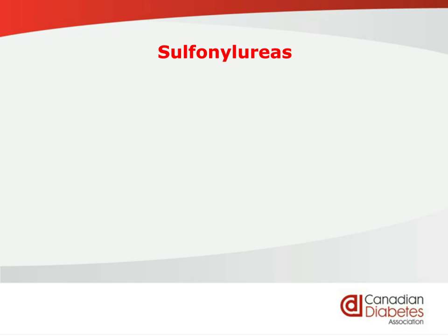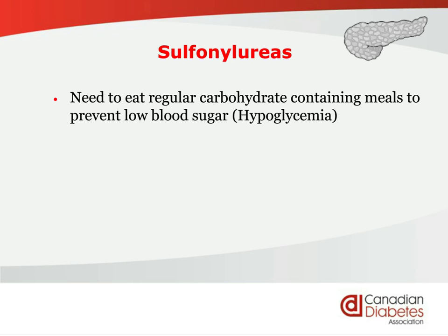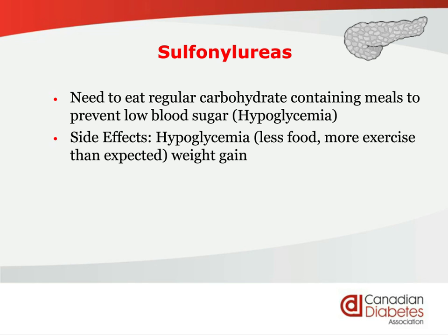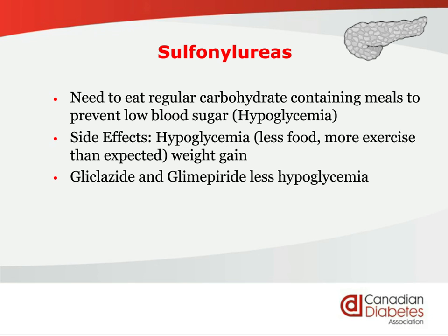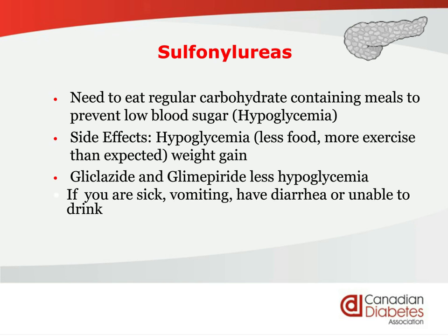With sulfonylurea medications, you have to make sure you're regularly eating carbohydrate-containing food — all your grains, fruits, and vegetables — at regular intervals so that you don't have a low blood sugar. If you just eat protein and avoid all carbohydrates, you are at risk of a low blood sugar on a sulfonylurea. The primary side effect is hypoglycemia, caused by less food than normal or more exercise than normal, and this medication can also cause weight gain. The glicazide and glimepiride products cause less hypoglycemia than glyburide because they're more sensitive to what your blood sugar is. If you are sick, vomiting, have diarrhea, or are at risk of dehydration, stop these medications until you're better and check your blood sugar more often.